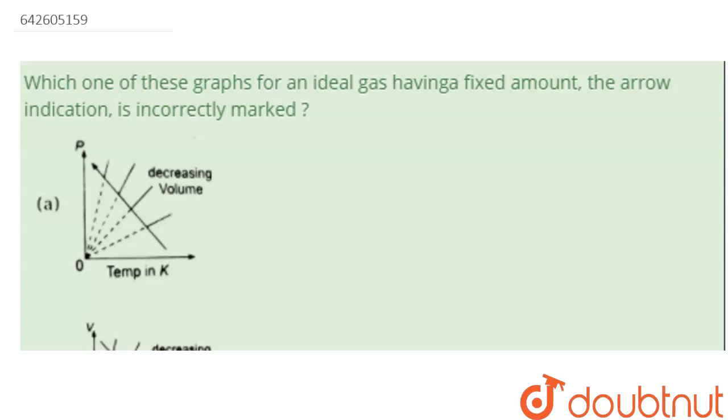Which one of these graphs for an ideal gas having fixed amount, the arrow indication, is incorrectly marked?